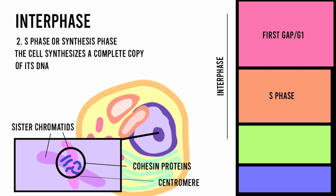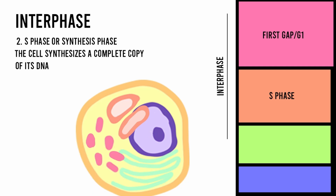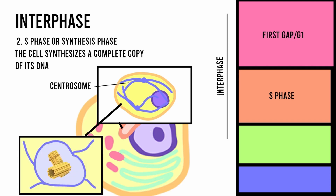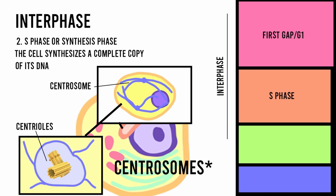Furthermore, during the synthesis phase, a structure known as the centrosome is also duplicated. Each centrosome comprises two microtubule rings known as centrioles. The two centrosomes will be critical in later stages of the cell cycle, especially in the movement of DNA during cell division.